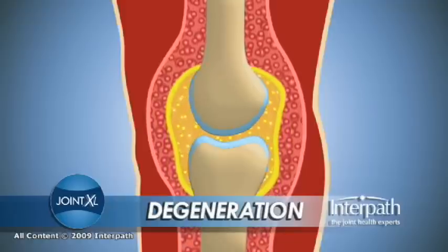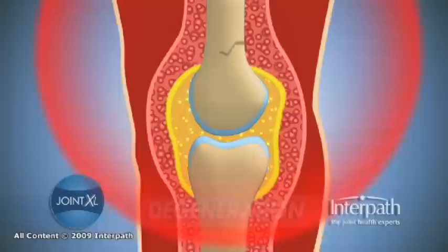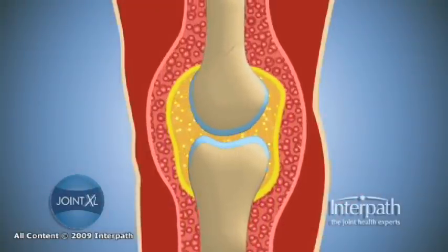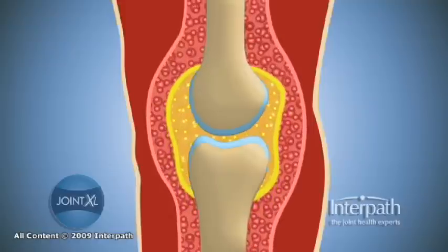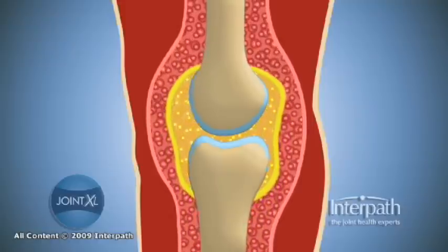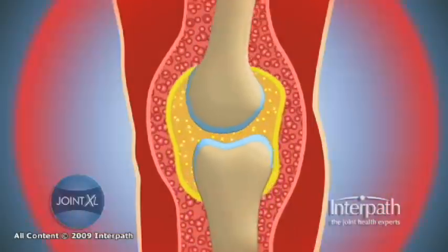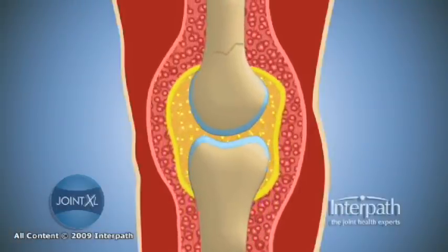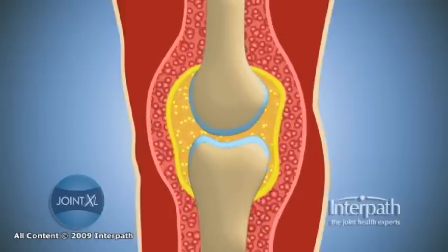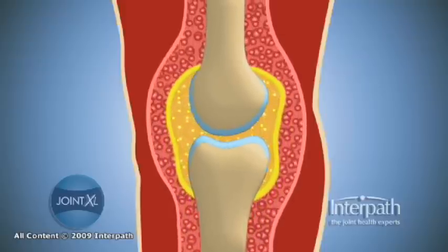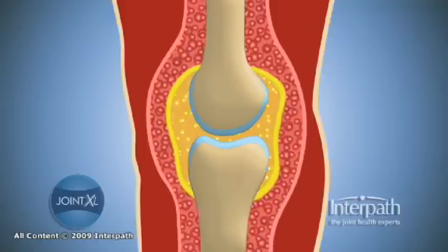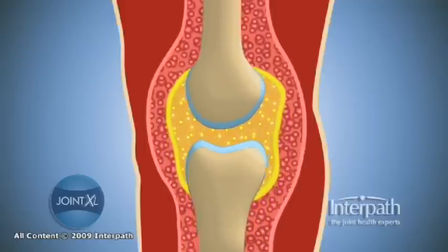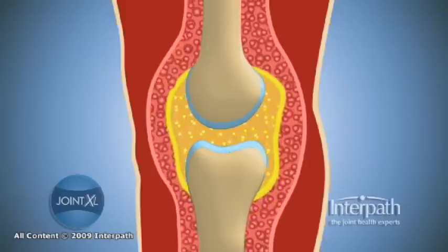However, when trauma is persistent, the process of breakdown begins to exceed that of rebuilding. Proteoglycans begin to break down in the cartilage, reducing the ability of cartilage to retain water, thus reducing its ability to protect the articulating ends of the bones. As more cells of the joint become damaged, they die at a rate more rapid than new cells can develop.